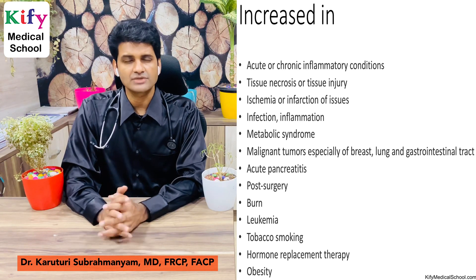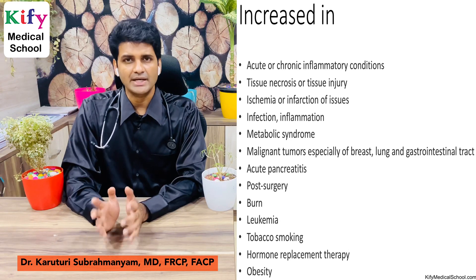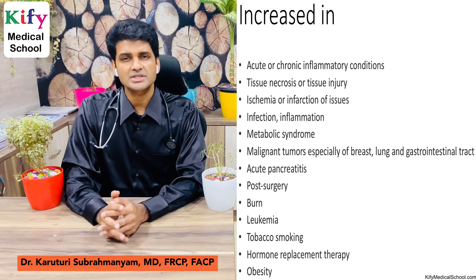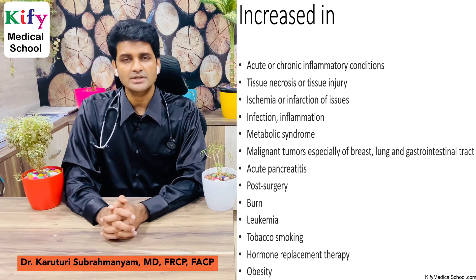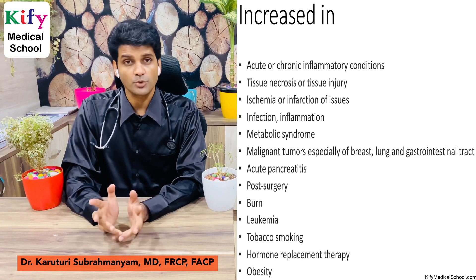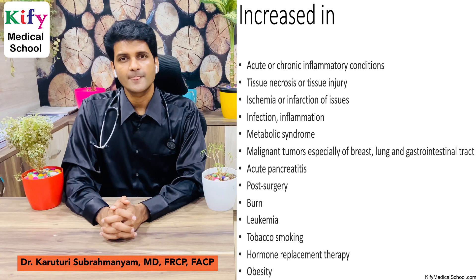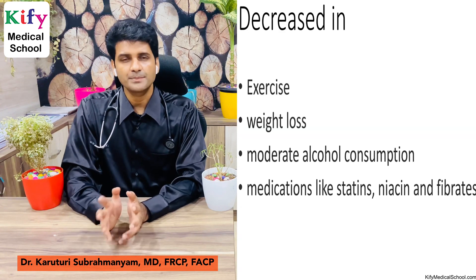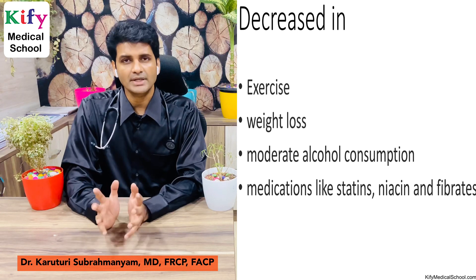CRP is increased in acute or chronic inflammatory conditions, tissue necrosis or injury, ischemia or infarction of tissues, infection, inflammation, metabolic syndrome, malignant tumors, acute pancreatitis, post-surgery, burns, leukemia, tobacco smoking, hormone replacement therapy, and obesity. CRP is decreased with exercise, weight loss, moderate alcohol consumption, and certain medications.